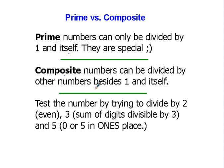Let's look at the number one. One can be divided by one and that's it — there is no 'itself.' So the number one is not considered to be a prime number or a composite number. It's not in either group.